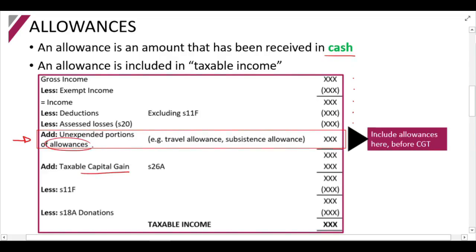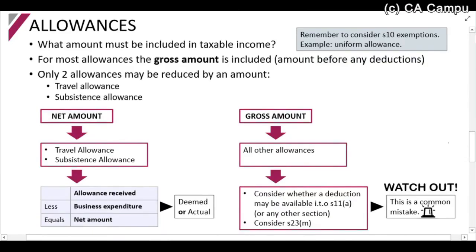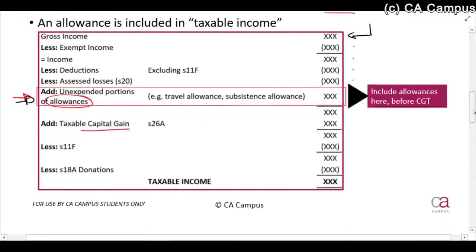Specifically, section 8 refers to unexpended portions of allowances, but for now just focus on allowances generally. In some solutions you will see the amount included in gross income - that is an inconsistency, so to ensure you are always correct, include it in the taxable income section. Note that some allowances studied in section 10 are exempt, such as the uniform allowance, and those exemptions still apply.